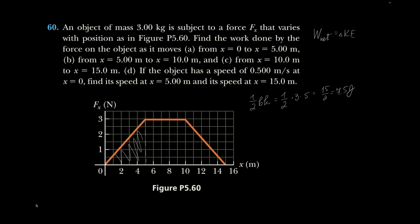We just repeat. From 5 to 10, that's easy — that's just a rectangle. Work from 5 to 10 is going to be 3 times 5, and that's 15 joules of work. And then from 10 to 15, it's the same triangle, which is half of the rectangle. So work from 10 to 15 is, again, 7 and a half joules.